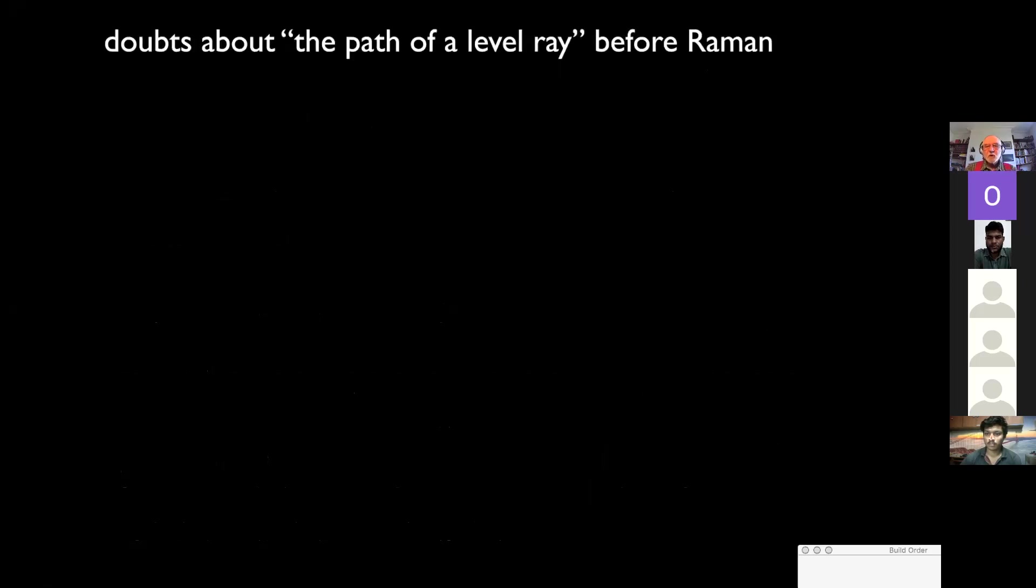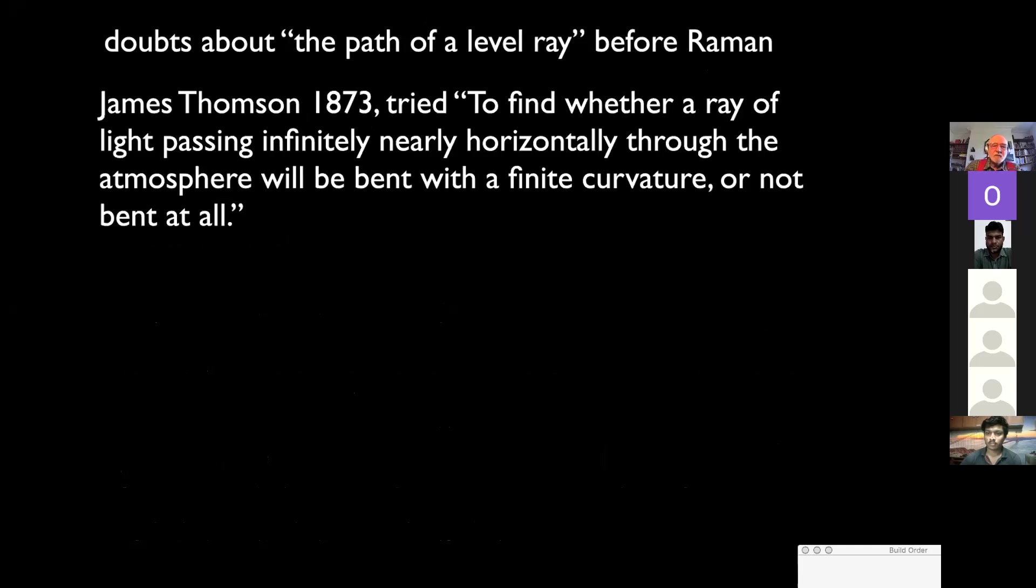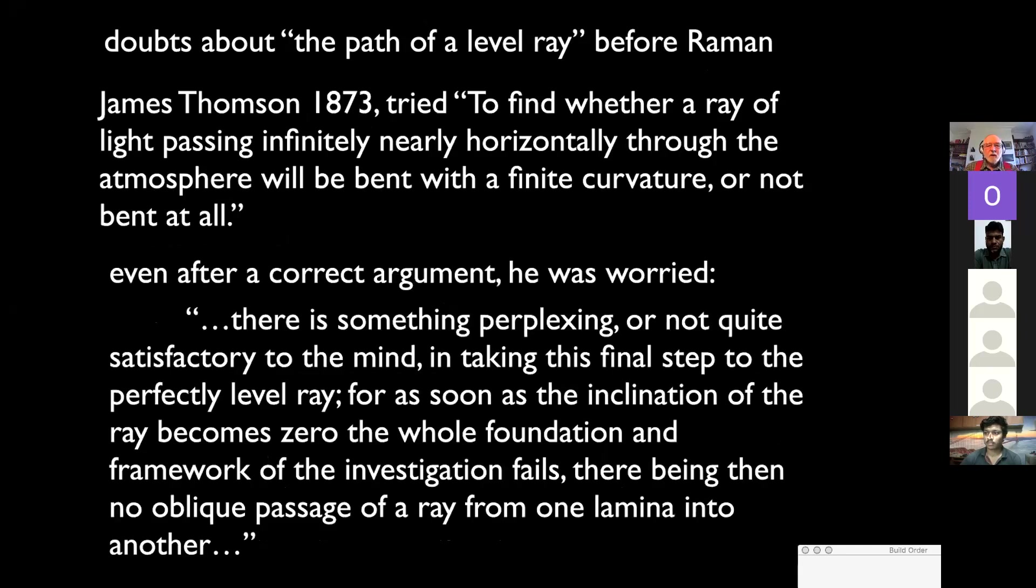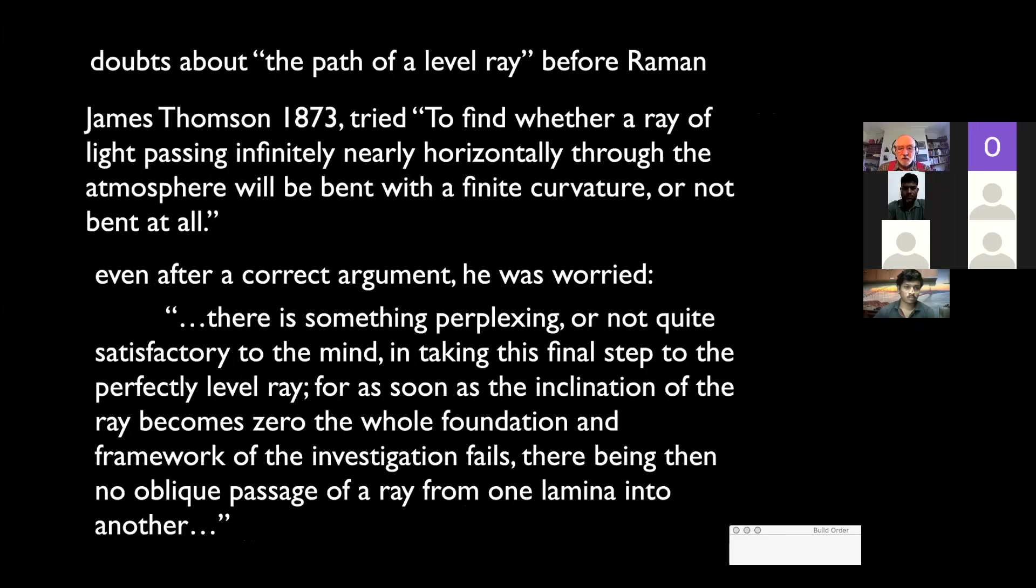There were doubts about this so-called level ray. In 1873, the brother of Lord Kelvin, James Thompson, tried to discover whether a ray of light passing infinitely nearly horizontally will be bent with a finite curvature or not at all. He gave a correct argument, but he was still worried. There's something perplexing in taking this final step to the perfectly level ray. For as soon as the inclination of the ray becomes zero, the whole foundation and framework fails.